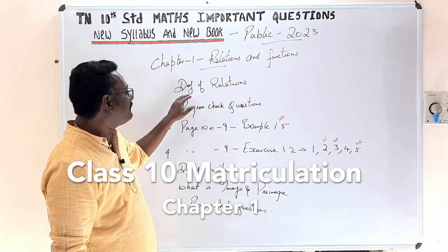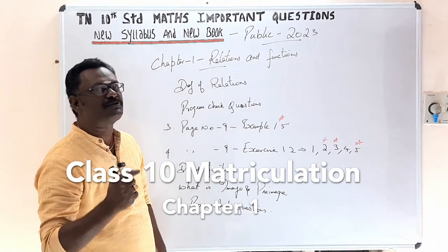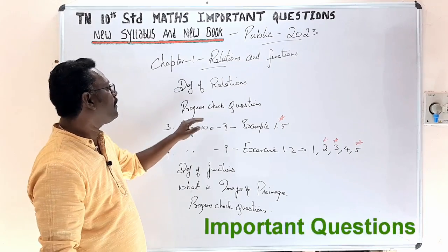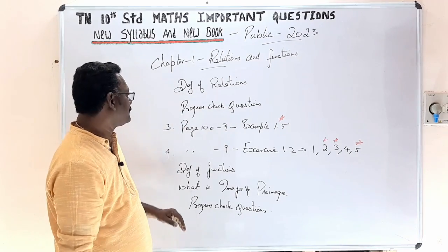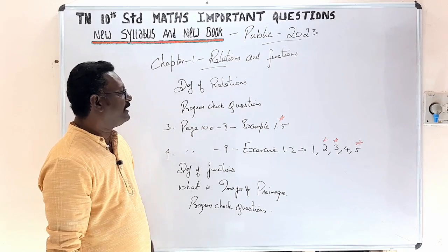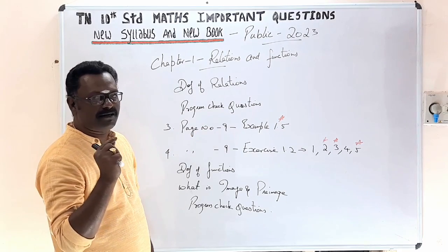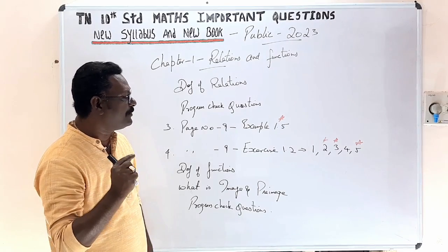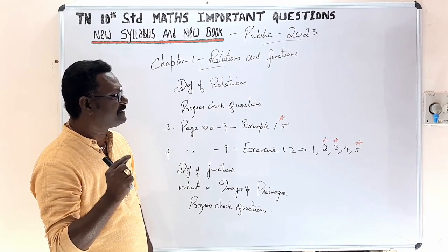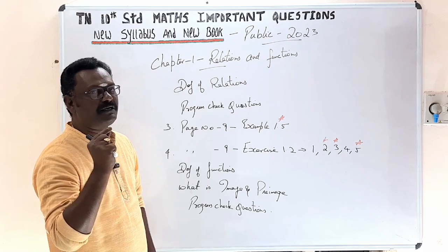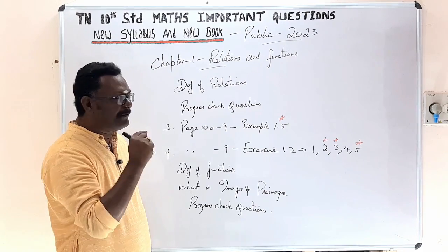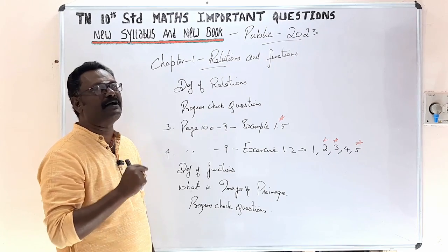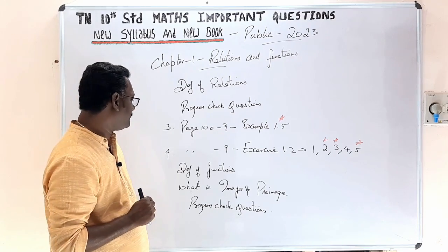Next, the definition of Relations. Look at the relations definitions and progress check questions. Page number 9, example 1.5 is very important. Page number 9, Exercise 1.2: 1st, 2nd, 3rd, 4th, and 5th sums are very important. I will mark these in red — those are the frequent questions we will concentrate on.